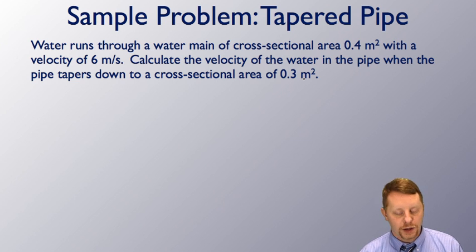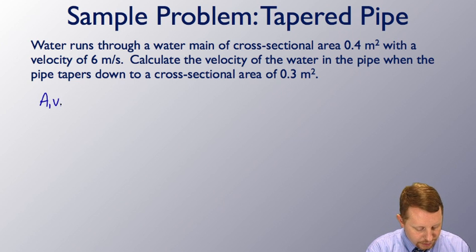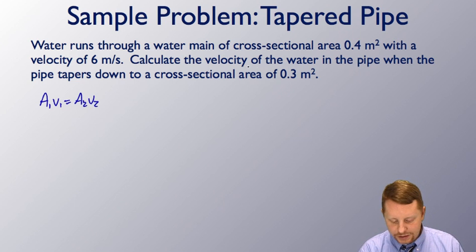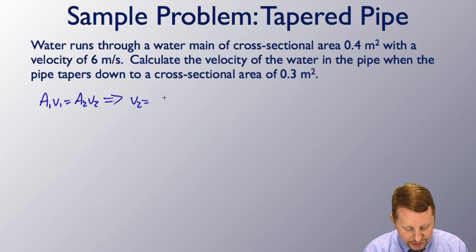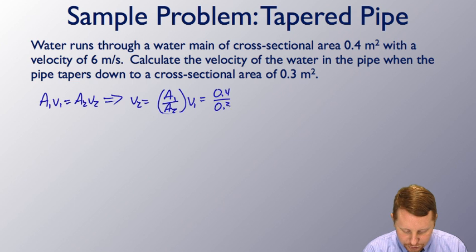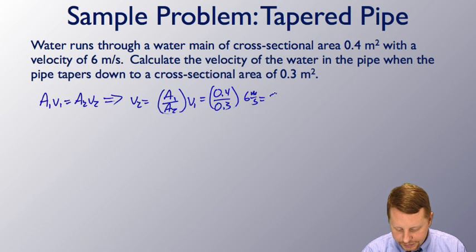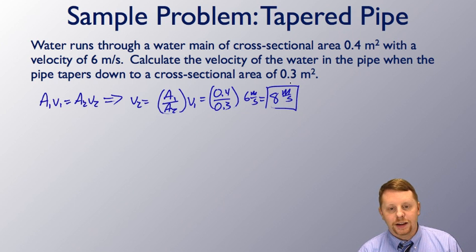We'll use our continuity equation for fluids that says A1v1 equals A2v2, and we want the velocity over here where it's 0.3 meters squared. Let's call that v2. So solving for v2, that must equal A1 over A2 times v1, or 0.4 square meters over 0.3 square meters times v1 which was 6 meters per second, for a new velocity of 8 meters per second in the 0.3 square meter section of the pipe. Where the pipe gets narrower, the velocity speeds up.